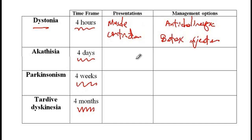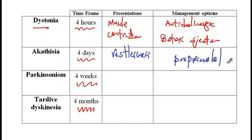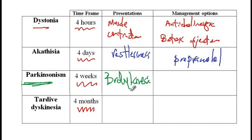Akathisia is associated with an inner sensation of restlessness, and these patients are typically treated with propranolol. About four weeks later, Parkinsonism symptoms such as bradykinesia or slowed movement may develop. Again, the treatment is anticholinergics such as diphenhydramine or trihexyphenidyl.